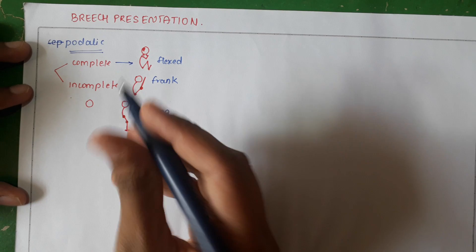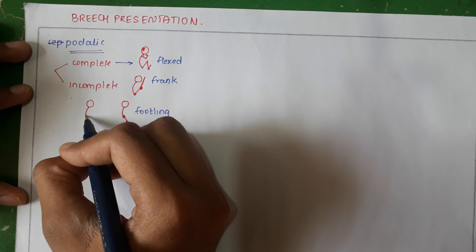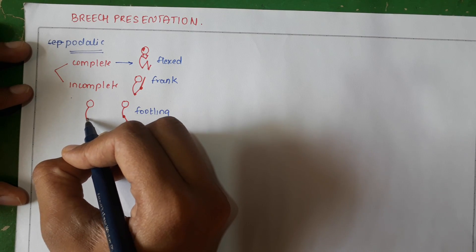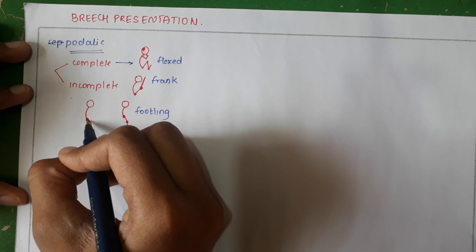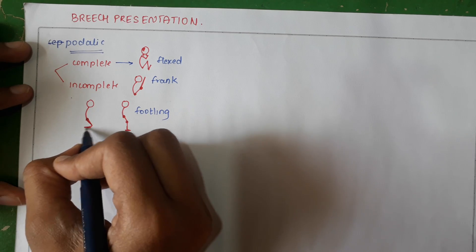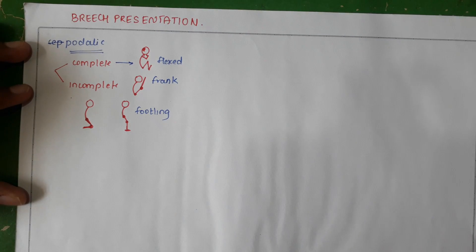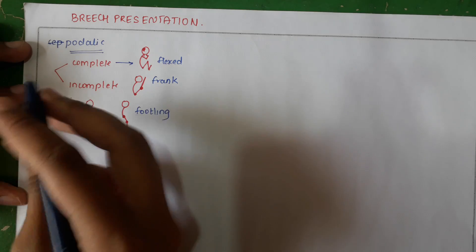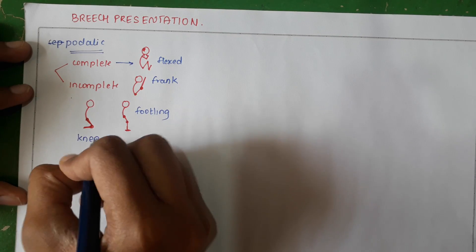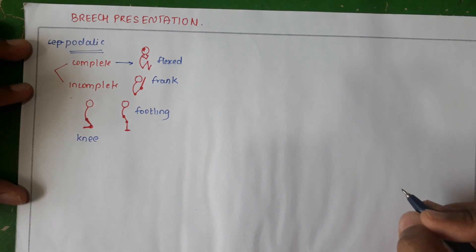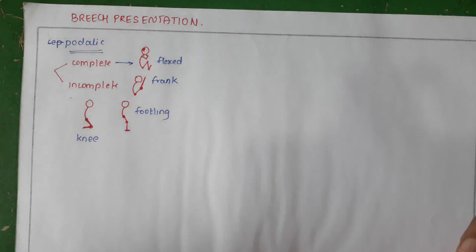If there is extension at the hip joint and flexion at the knee joint, then this will also be called a knee presentation. These are some of the few possibilities which can occur in Breech.